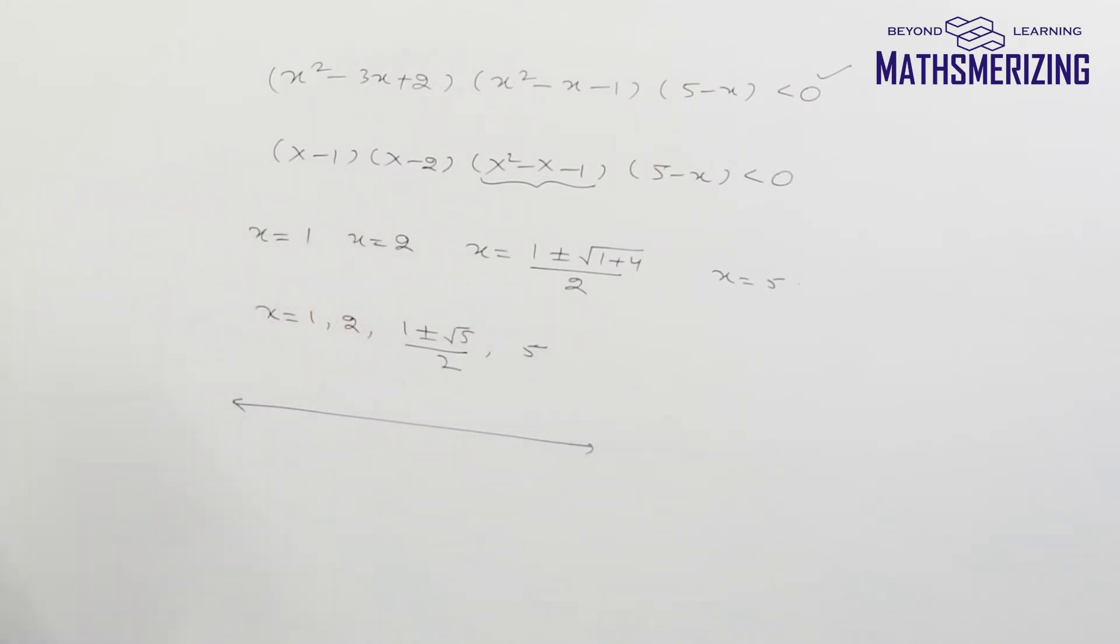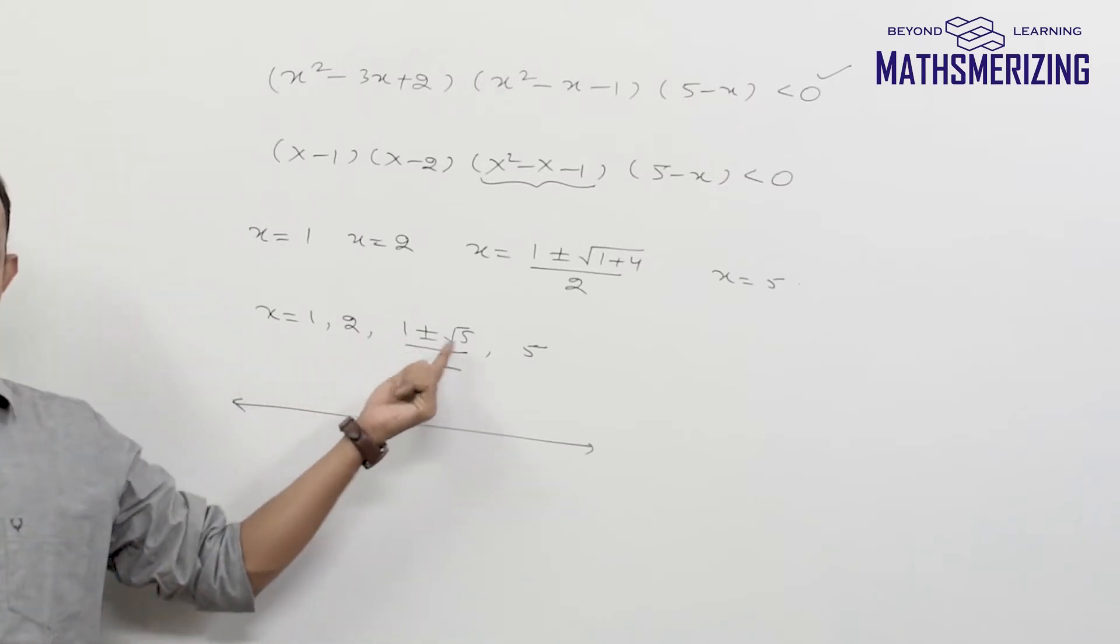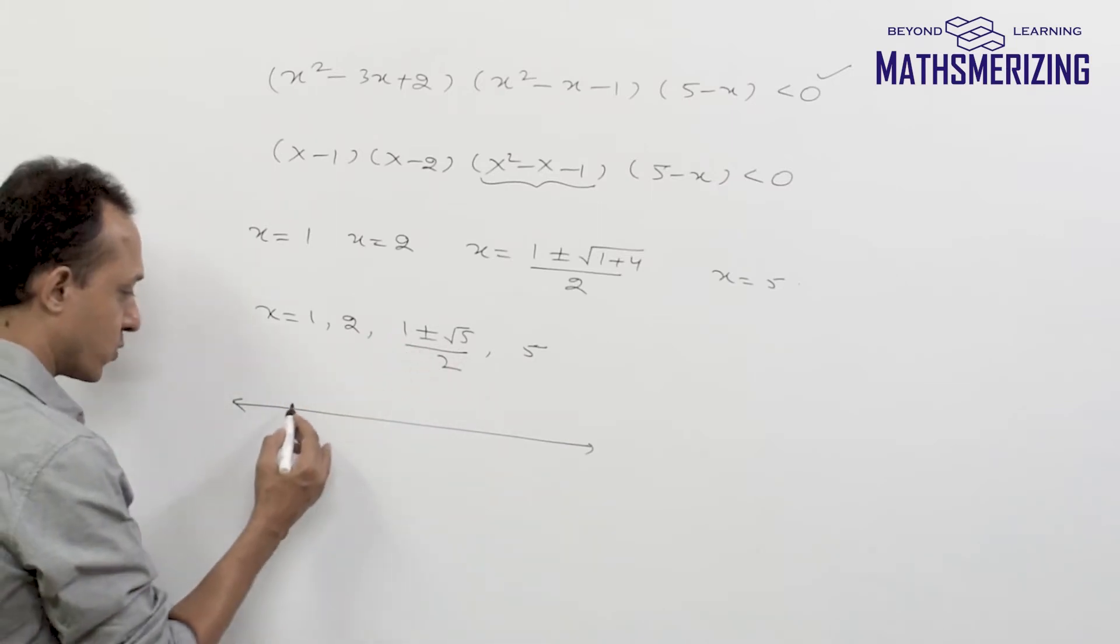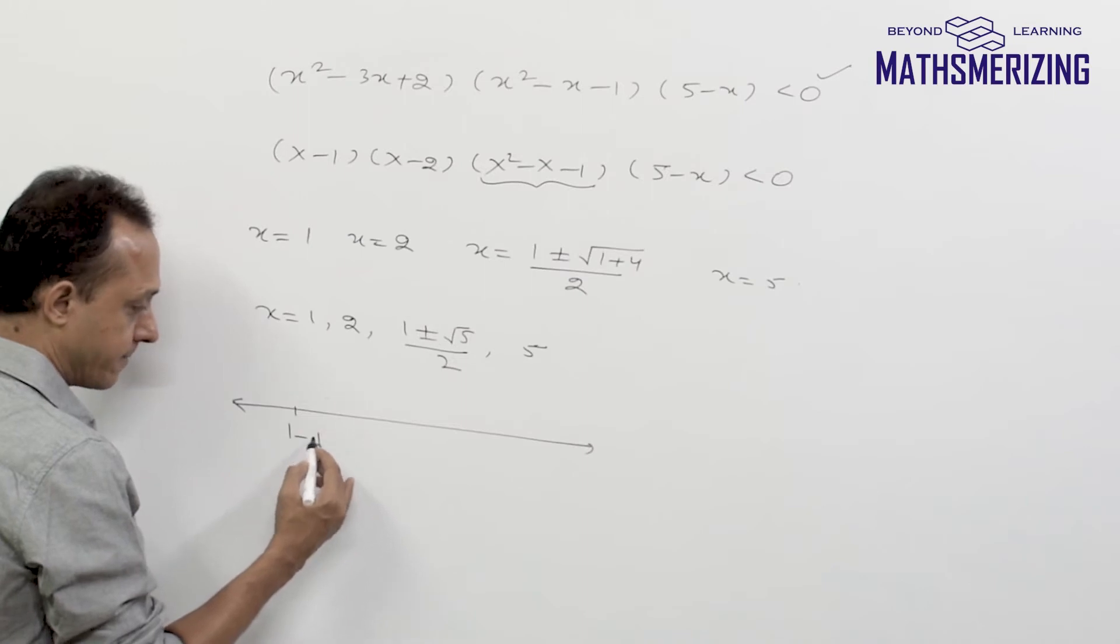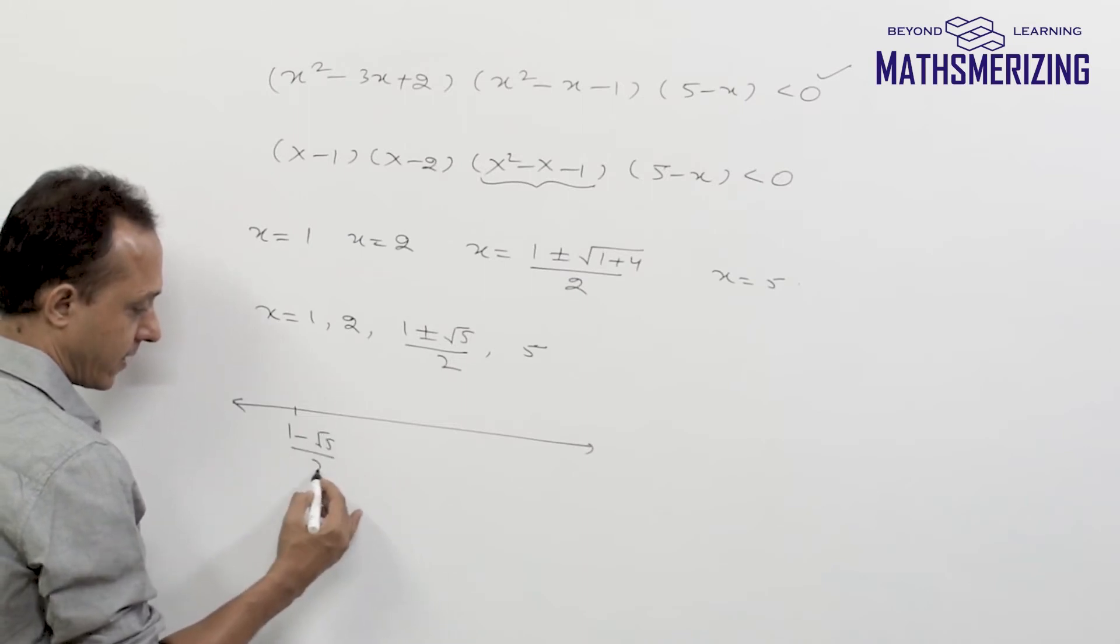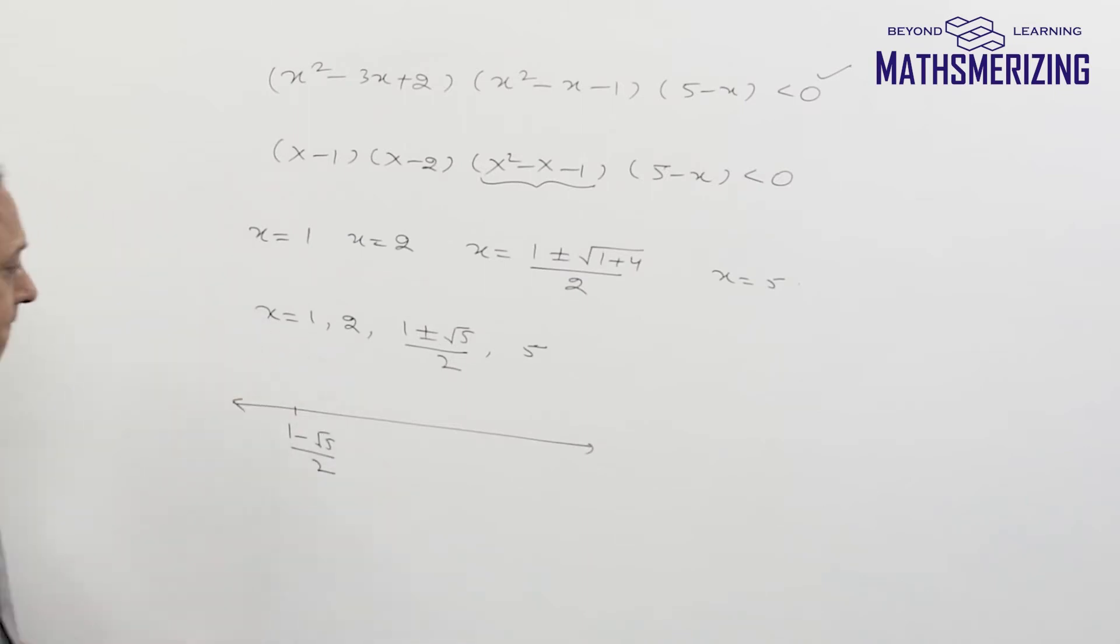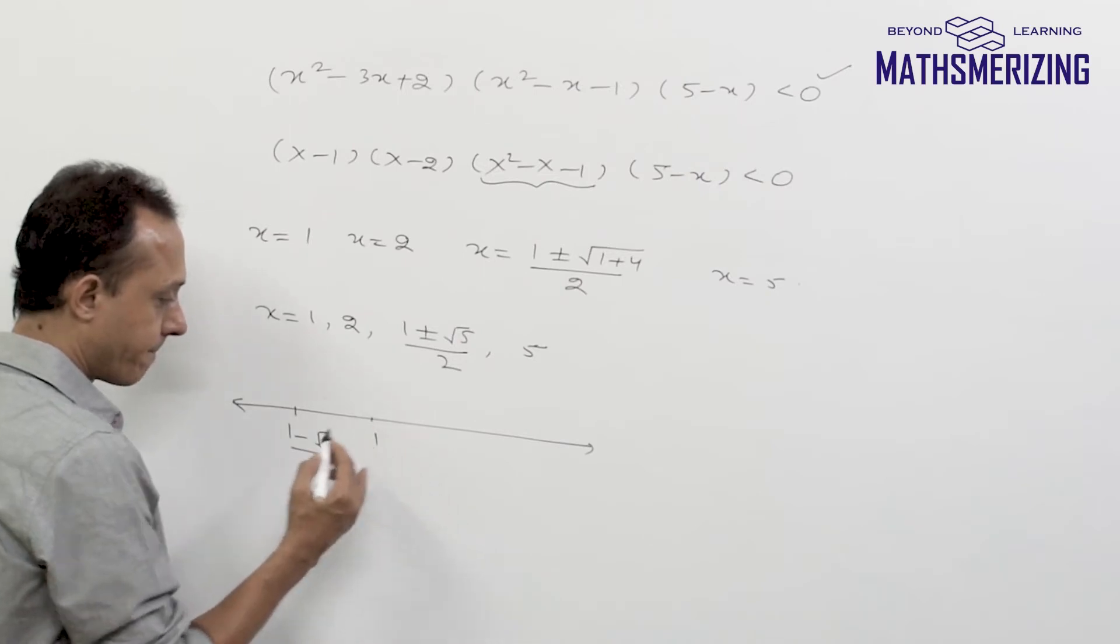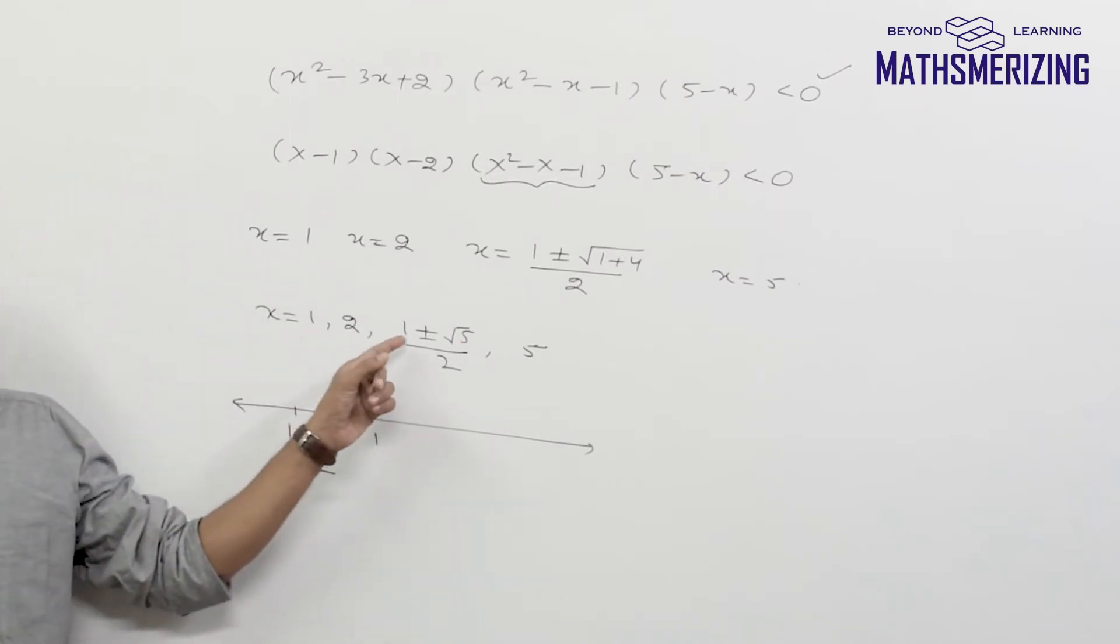Now what's the smallest one? Smallest one is 1 minus root 5 by 2. So this one is 1 minus under root 5 by 2, and then followed by 1.